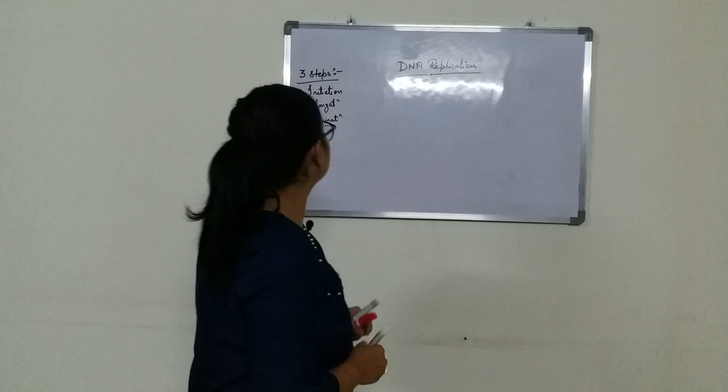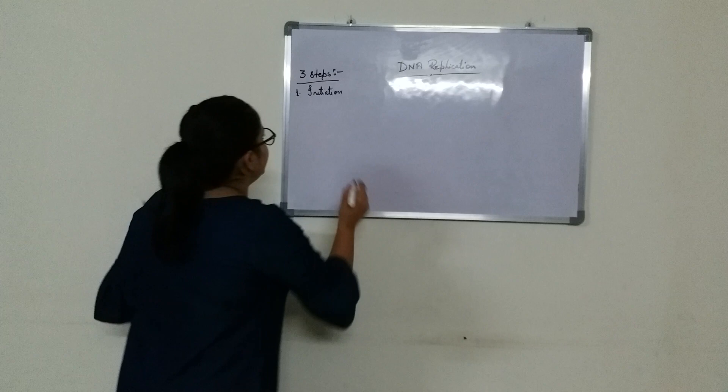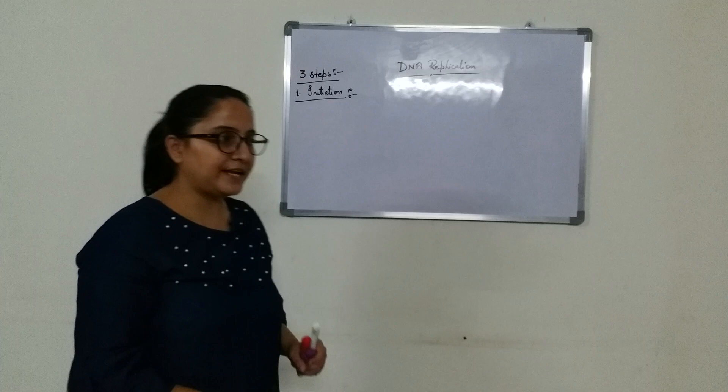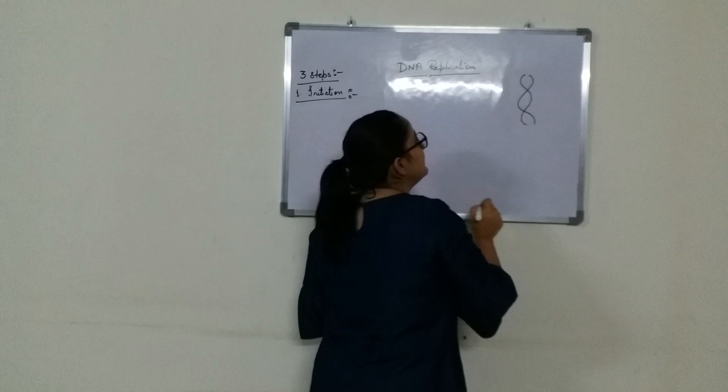Now coming to the initiation of DNA replication. There are specific locations present in the DNA where the origin of replication happens. For example, in E. coli there is a circular DNA. In prokaryotic cells we mostly find circular DNA.